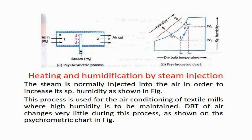This process is achieved by steam injection, where hot steam is injected into the air to increase its specific humidity. This process is used for air conditioning of textile mills where high humidity needs to be maintained and temperature also needs to increase. The dry bulb temperature of air changes very little during this process, as shown on the psychrometric chart where from point one to two, sensible heat added is very less.